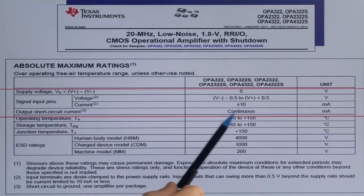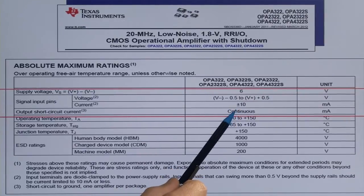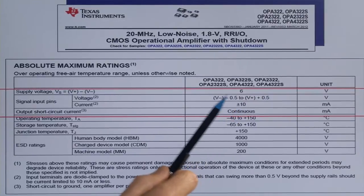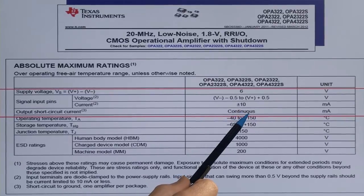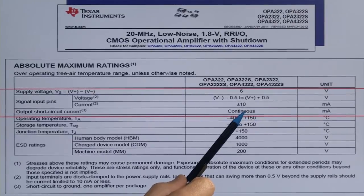The output can withstand a continuous short to ground. If the output is biased at a different level, then it may not be continuous.